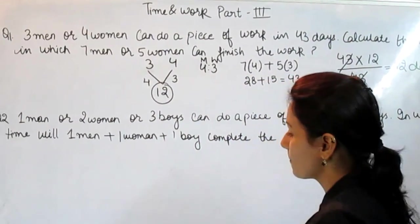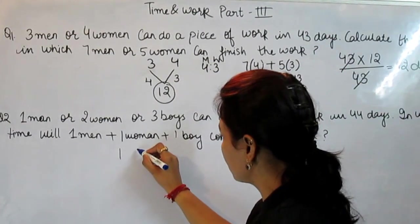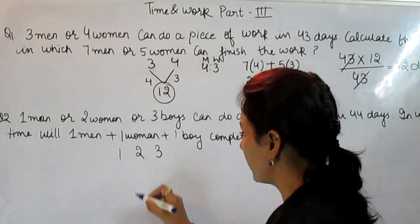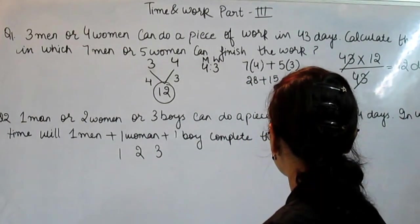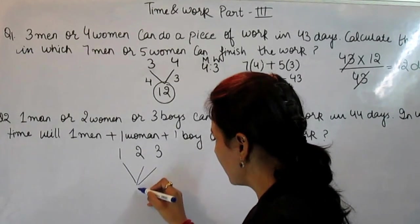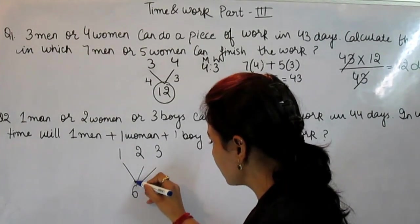Next question is: 1 man, 2 women, or 3 boys can do a piece of work in 44 days. It means 44 days. When we get the multiple, that is 6.